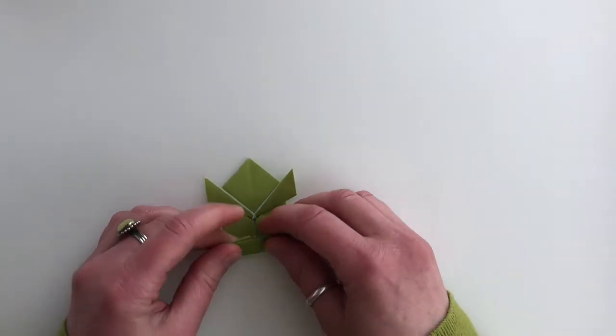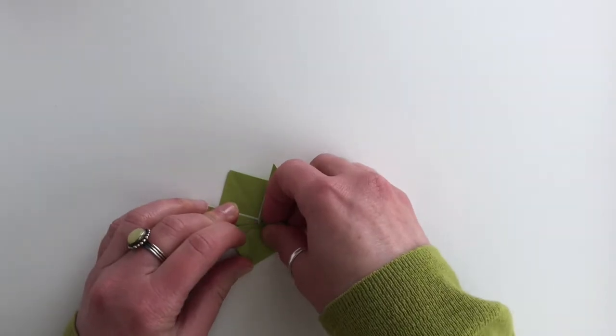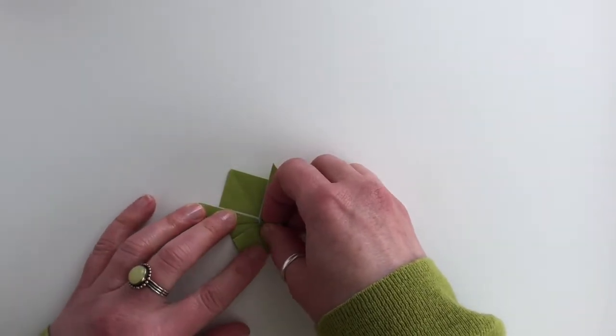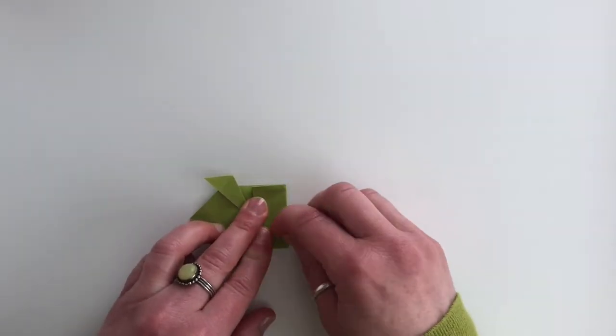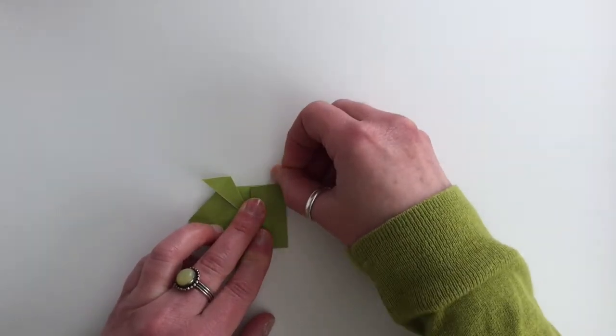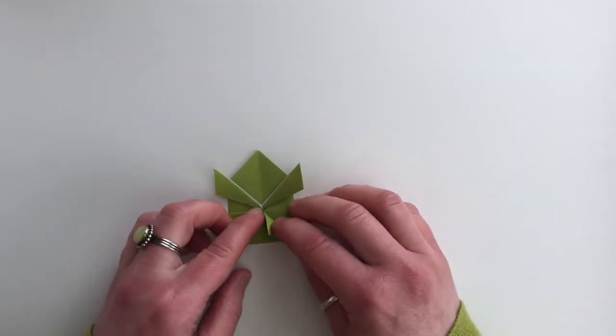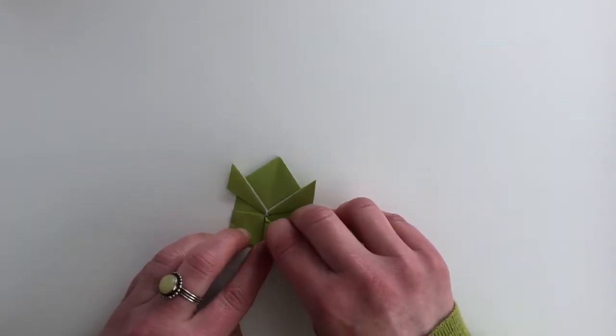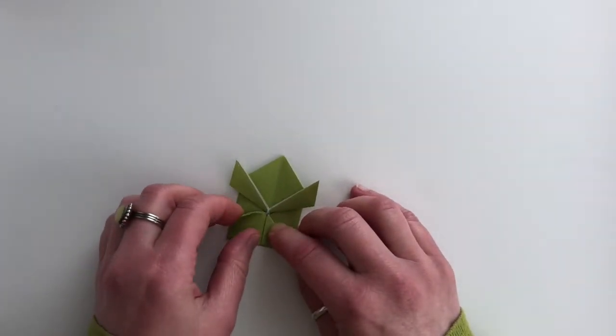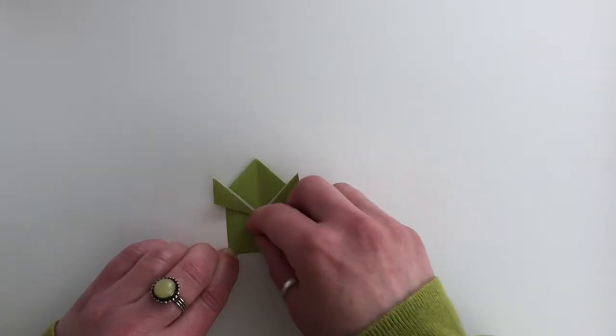We're going to fold the bottom up again. Now we're folding several layers this time, so you have to be careful to keep everything nice and square and flat. Crease it with your fingernail. Take this corner and bring it down to make a triangle, and take this corner down to make a matching triangle on the other side.